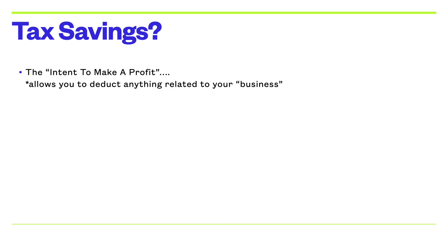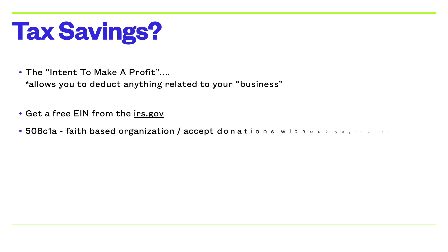Tax savings — I'm not a financial advisor, these are just facts and I'm planting the seed. The intent to make a profit allows you to deduct anything related to your business — that's just the tax law. You don't have to make a profit; you just had to intend to make a profit. Next, you can get a free EIN from IRS.gov — Employee Identification Number — and this starts to separate you from your personal liability and personal taxes. And this is really cool: a 508C1A. You can create one of these — it's called a faith-based organization, basically a ministry. You can start one, there's a ton of information online, and it allows you to accept donations without paying taxes.